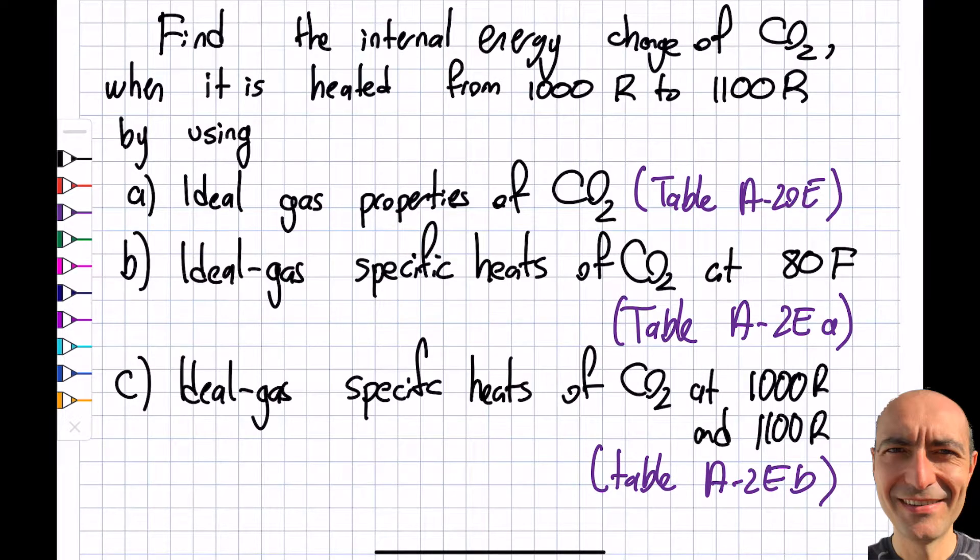Two: ideal gas specific heats of CO2 taken at room temperature, listed on Table A-2Ea for Çengel. Now I'm saying, okay, this is not working very well. Table A-2E also lists at different temperatures, so I'm saying go out and take the ideal gas specific heat at 1000, take at 1100, maybe take an average and see what kind of error we're working with.